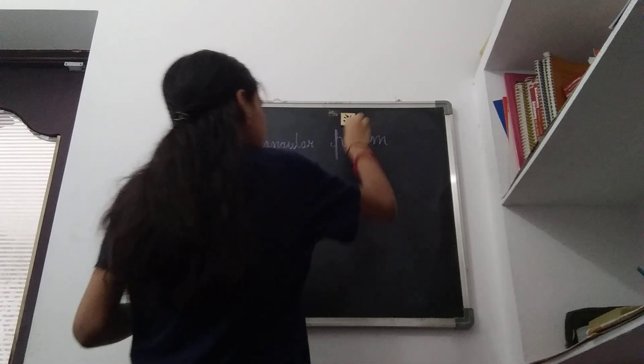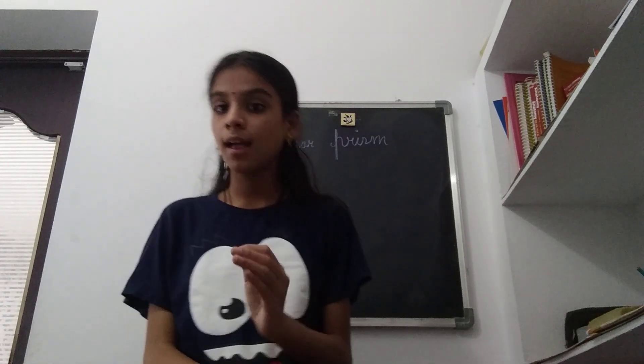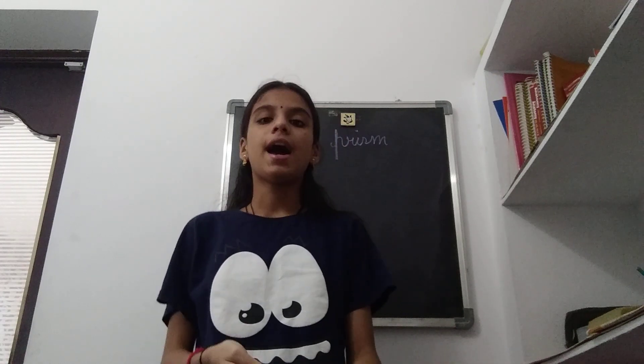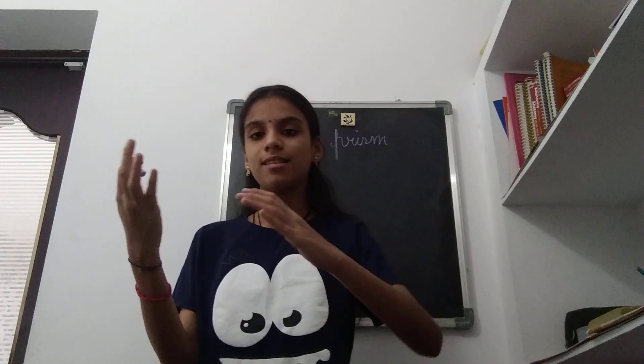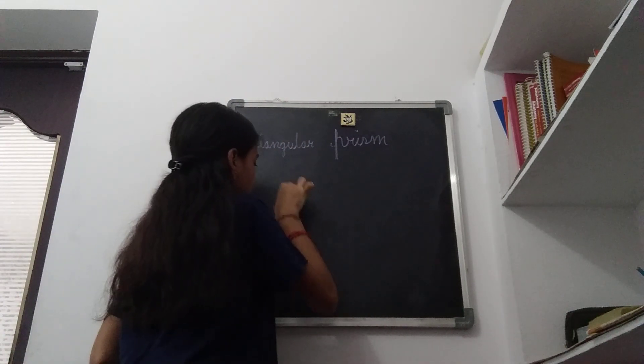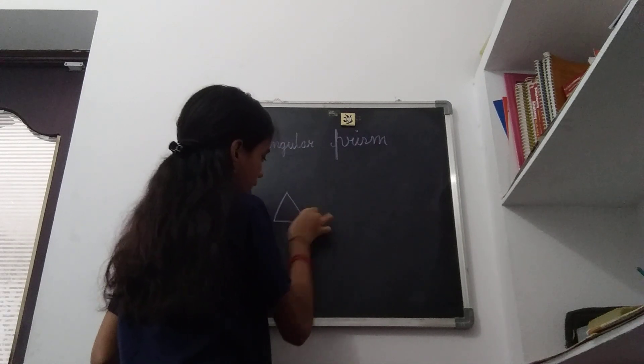Triangular prism - a prism is nothing but just drawing two figures of that shape which you need and drawing all these sides to the sides of another figure. For triangular prism, I'm going to draw two triangles.